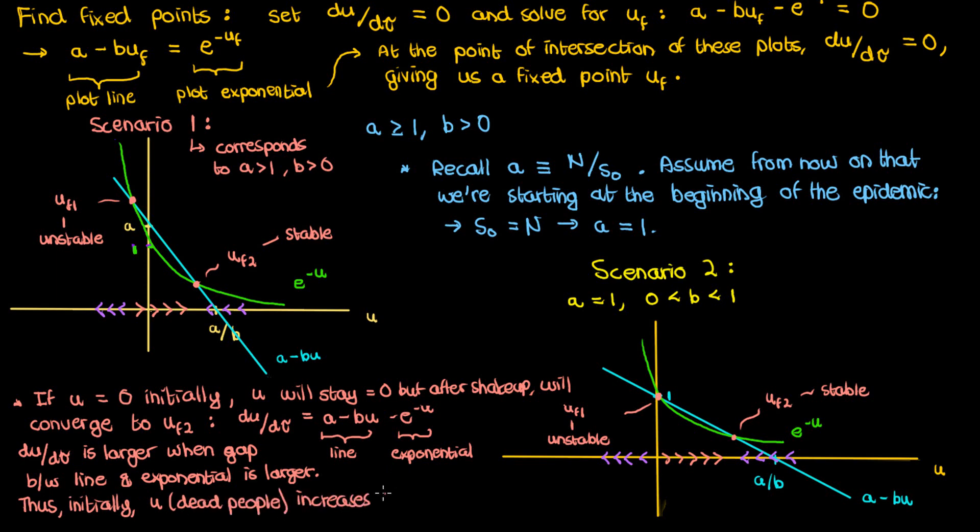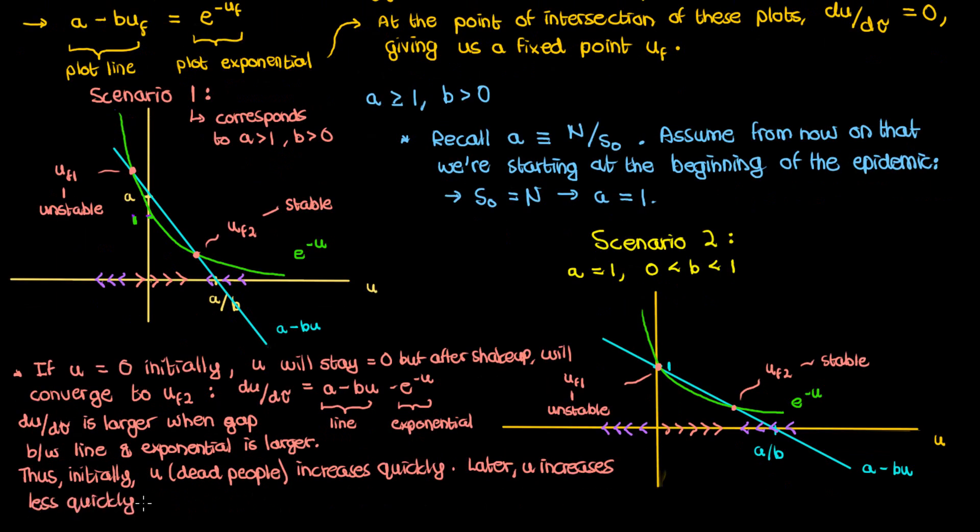As a result u the proxy for the number of dead people will initially skyrocket only later when this gap becomes smaller does the derivative sufficiently decrease and eventually the increase in u becomes slower and slower until we get to uf2 our stable fixed point. And this is one of the main principles of epidemics which you often hear echoed nowadays by public health officials.